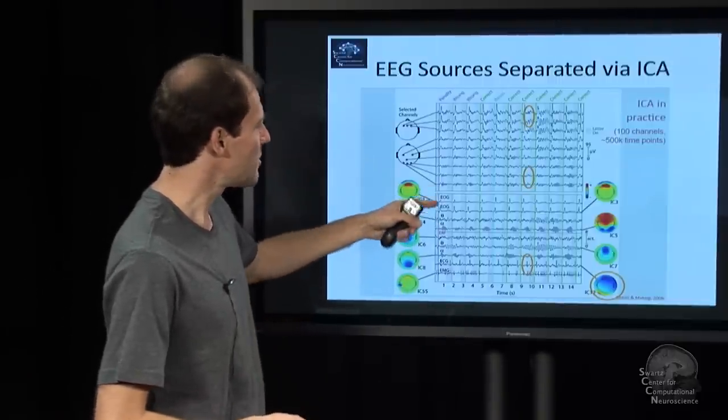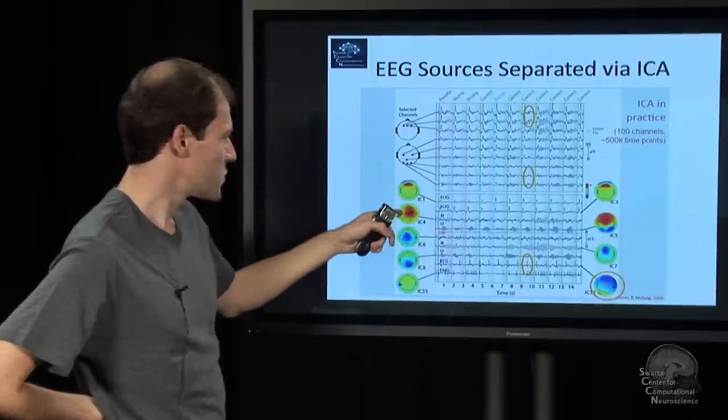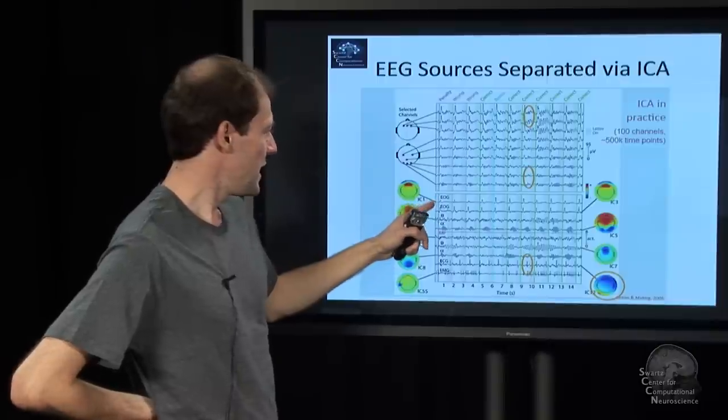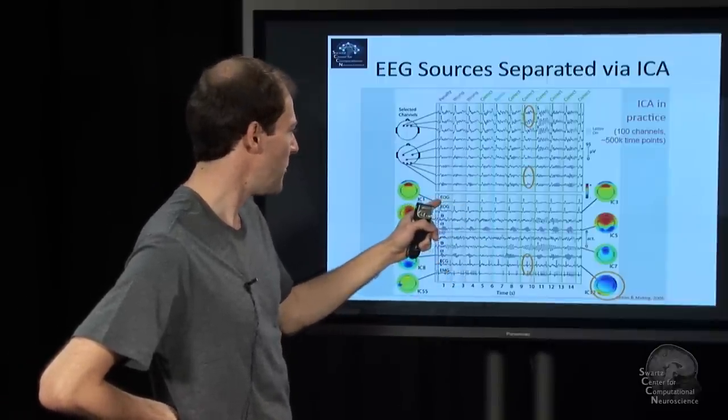And here is the signal separated into independent components or statistically independent components, which basically sum up to generate the signal. The way this basically works is you have a signal, and by the way, these things all look different.